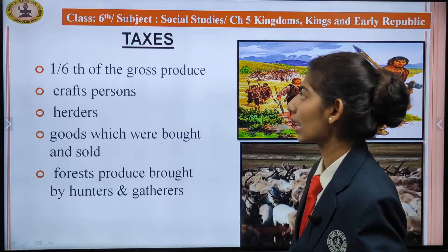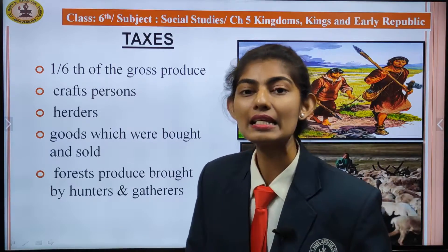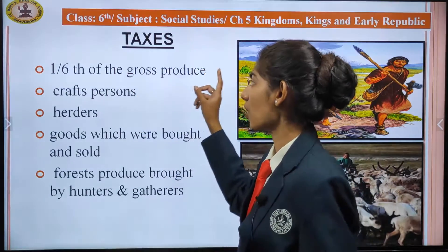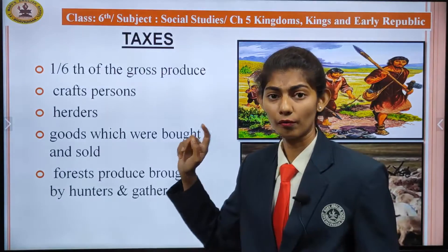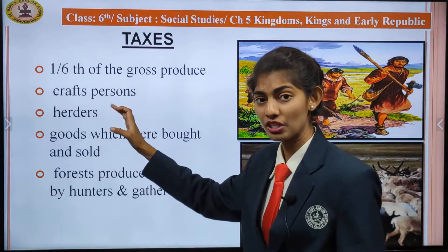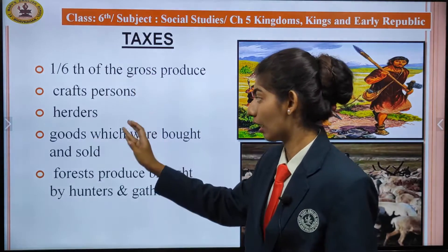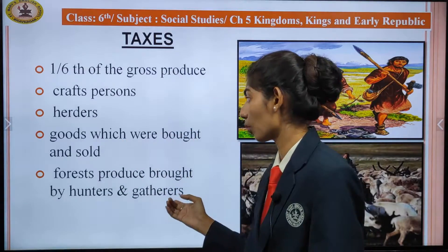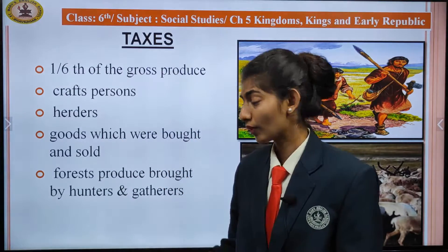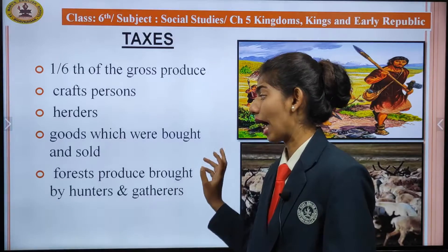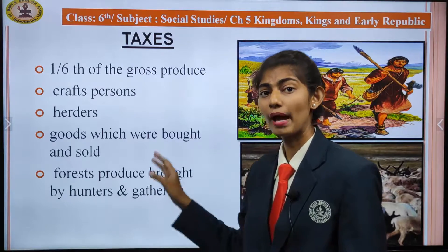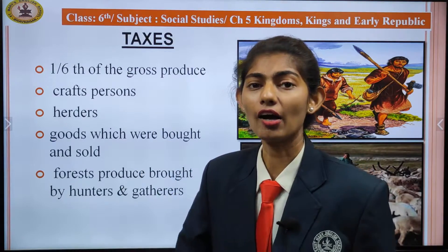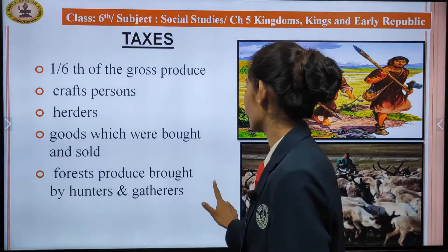Let's talk about taxes. Taxes were collected in several ways: one-sixth of the crops produced by farmers, goods from craftspeople and herders, goods that were bought and sold by traders, and forest produce brought by hunters and gatherers. This is how taxes were collected at that time.